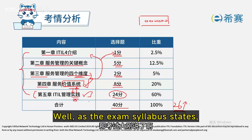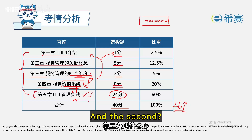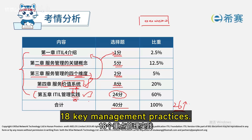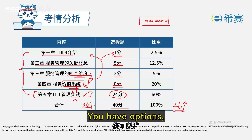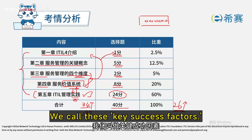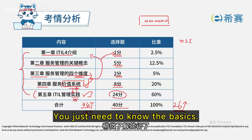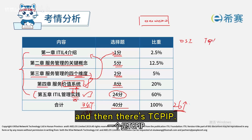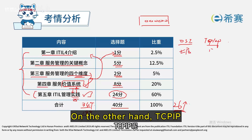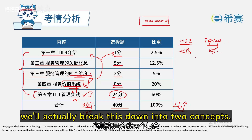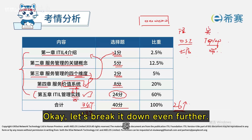According to the exam syllabus, there are two key points about practical application: first, understand all 34 ITIL management practices; second, master the 18 key ITIL management practices. In reality, only 18 of the 34 are essential — we call these the key success factors. This is similar to network engineering, which has two key concepts: the OSI model (a seven-layer model) and TCP/IP (a four-layer structure) — one theoretical, one practical.